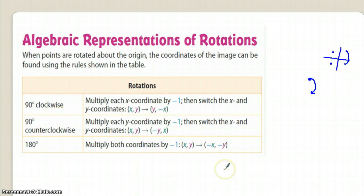Okay, so your y will become your x and your x will become your y. 90 degrees counterclockwise, so that means if we are here we are going this particular way. So if we're going that particular way it says multiply each y coordinate by negative one, then switch the x and y coordinates. So here you will have negative y comma x instead of x comma y. So again, you're switching the coordinates.